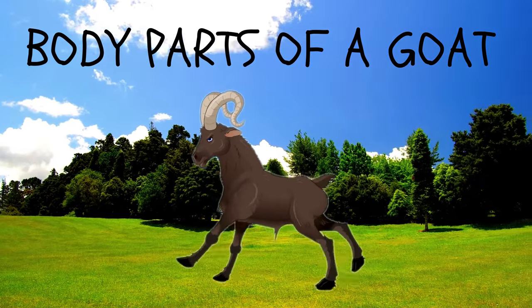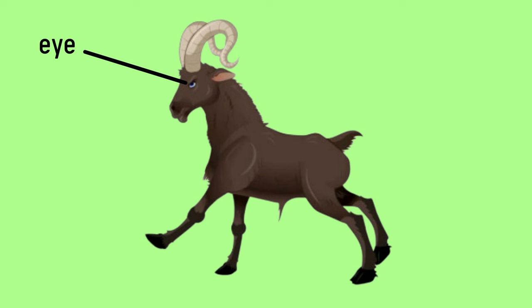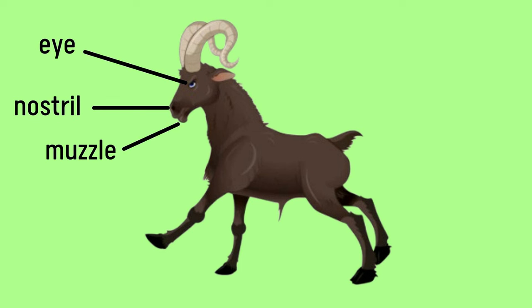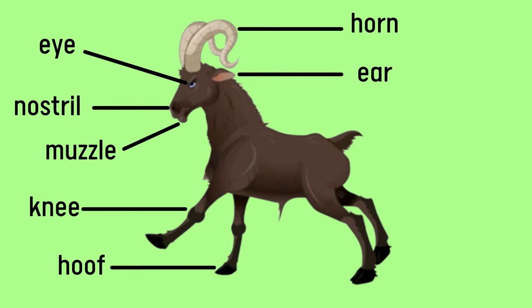Now we move on to the body parts of a goat. Eye. Nostril. Muzzle. Knee. Hoof. Horn. Ear. Tail. Hock.